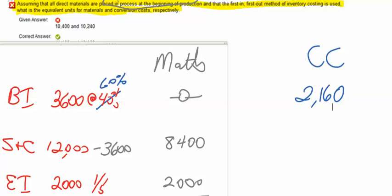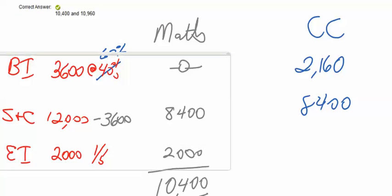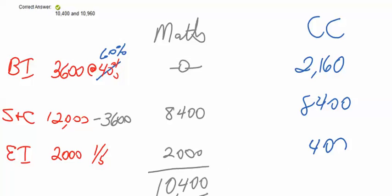With regard to the units that were started and completed, 8,400, we had to convert all of those, so 8,400. Finally, we consider our ending inventory, which is one-fifth complete. So, I can multiply 2,000 times one-fifth, or times 20%, and that's going to be 400 units.